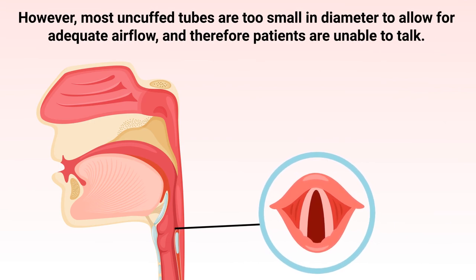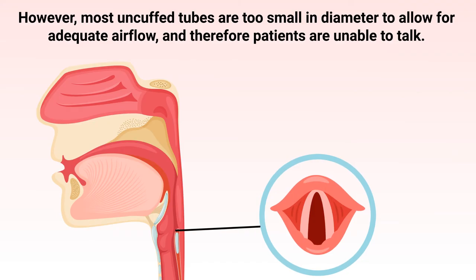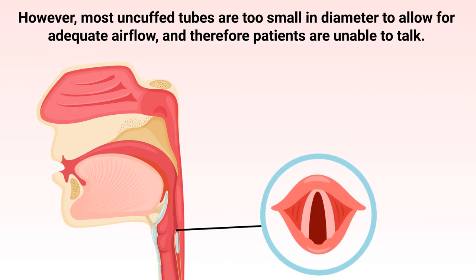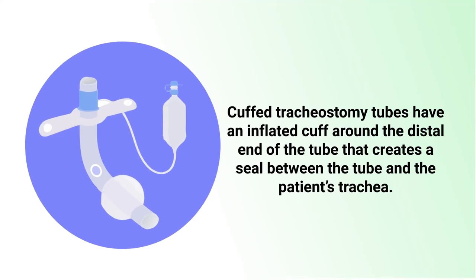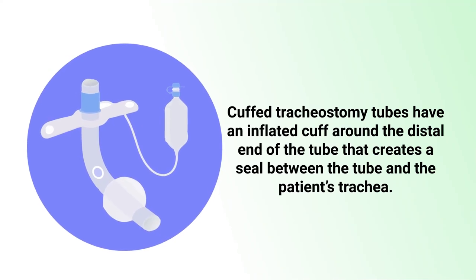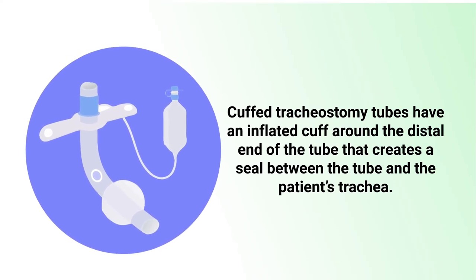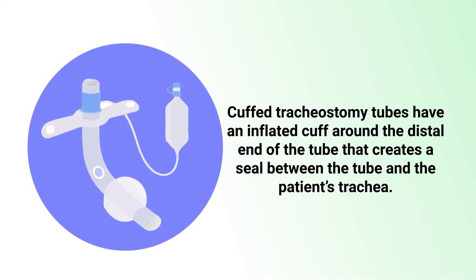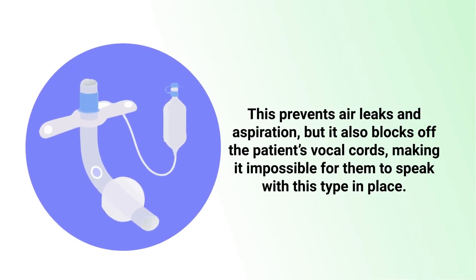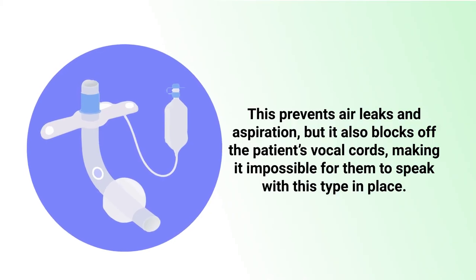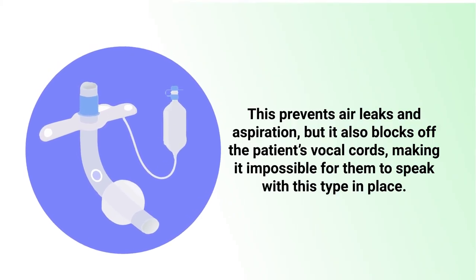However, most uncuffed tubes are too small in diameter to allow for adequate airflow, and therefore patients are unable to talk. Cuffed tracheostomy tubes have an inflated cuff around the distal end of the tube that creates a seal between the tube and the patient's trachea. This prevents air leaks and aspiration, but it also blocks off the patient's vocal cords, making it impossible for them to speak with this type of tube in place.